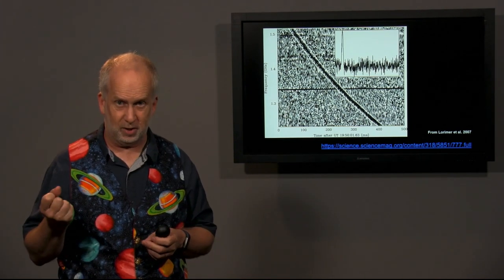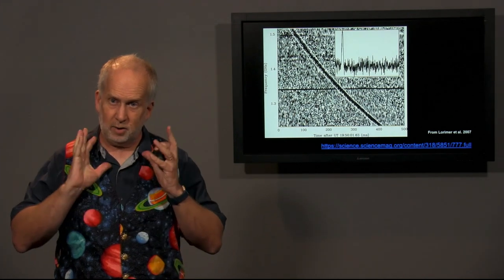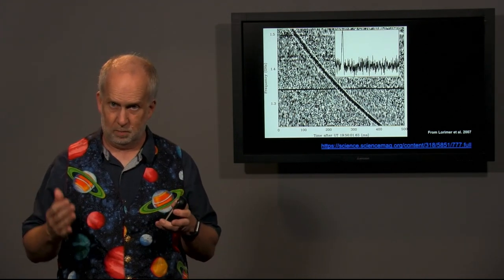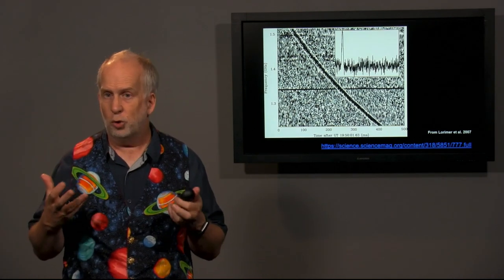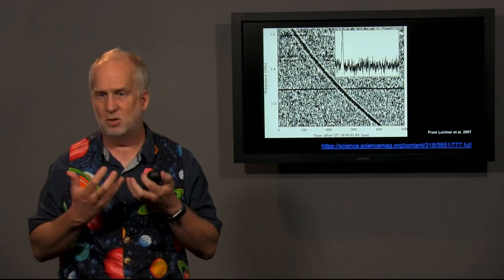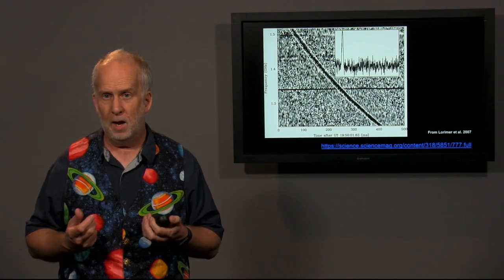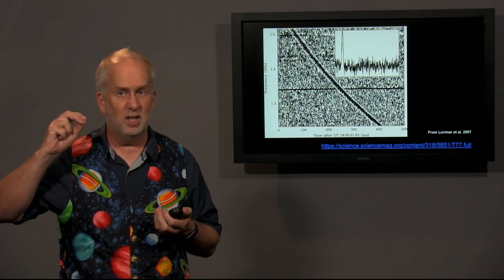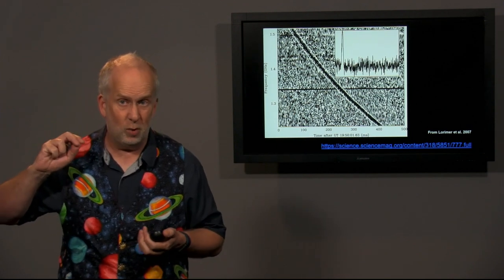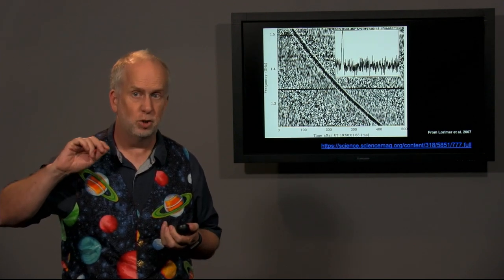Now if intergalactic space was empty then the pulse would arrive at all frequencies at the same time. But deep intergalactic space is not quite empty. It's full of a very diffuse plasma, and as the radio waves go through this plasma it actually slightly slows down the lower frequency radio waves. This is called the dispersion relation.